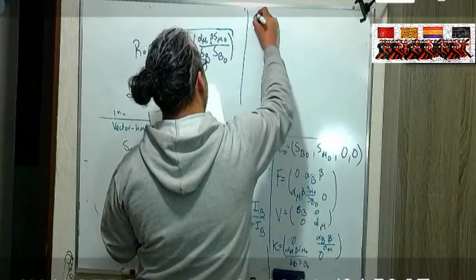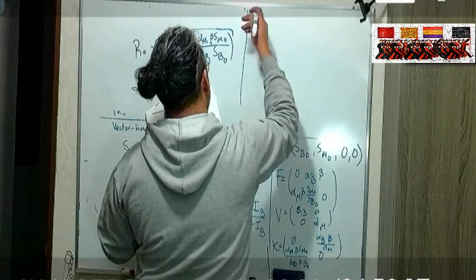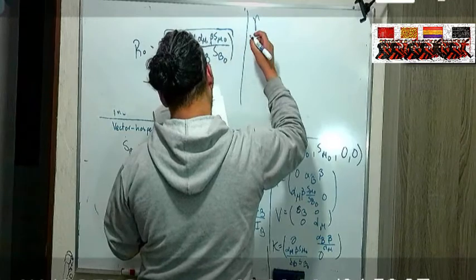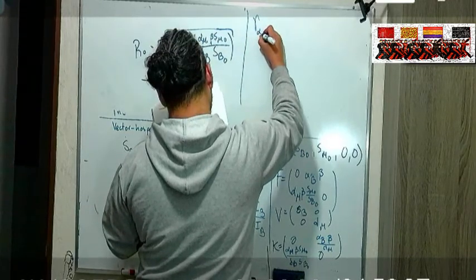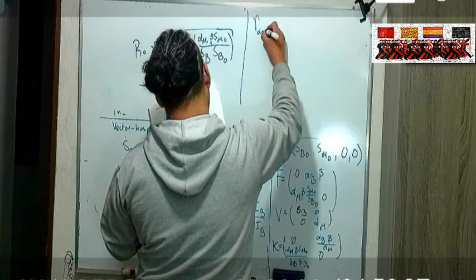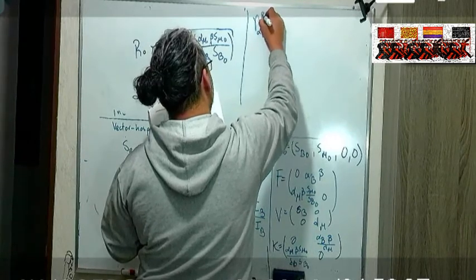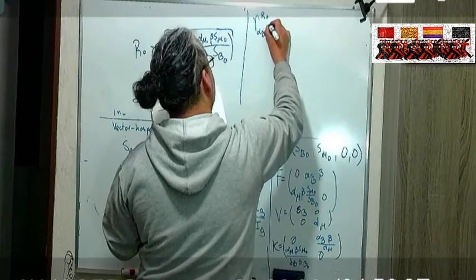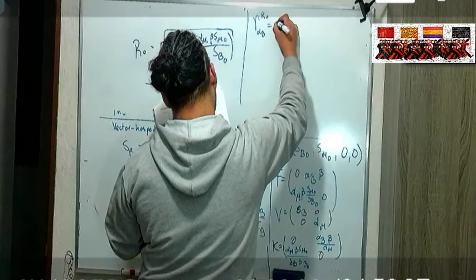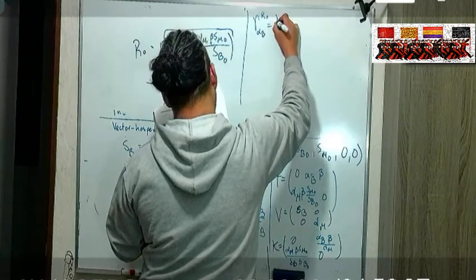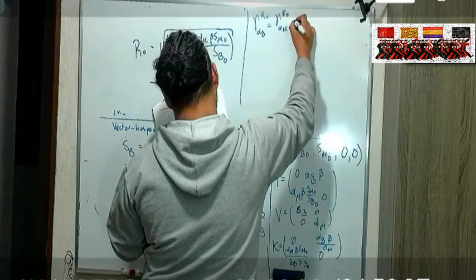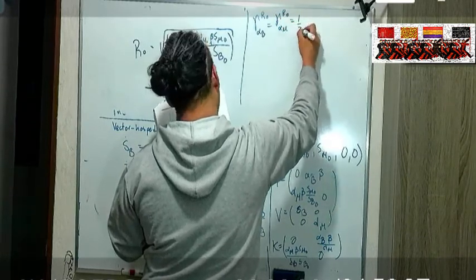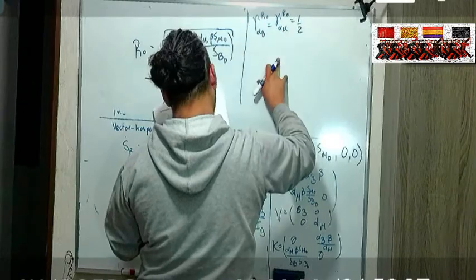Entonces estas son las sensitividades normalizadas. Para el alfa beta y para el alfa B y para el alfa M son la misma, le voy a poner lambda para dibujarlo más fácil. Para beta es uno.